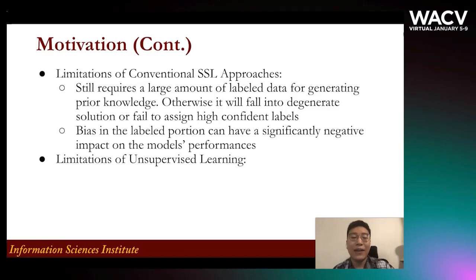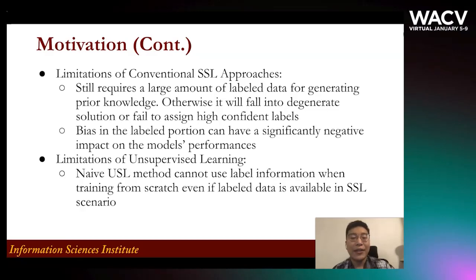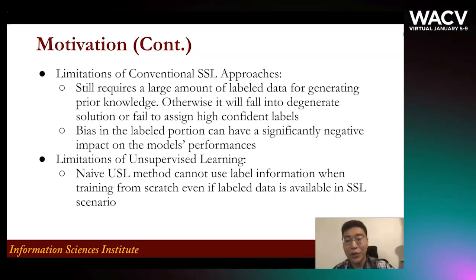Unsupervised learning also has its own limitations. For example, naive USL methods cannot use the label information when training from scratch, even if labeled data is available in an SSL scenario. Some methods first train the model using USL and unlabeled data, and then either freeze the model and train a classifier using labeled data, or they only use the labeled data to fine-tune the model.